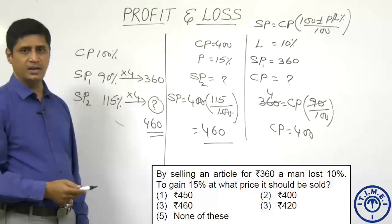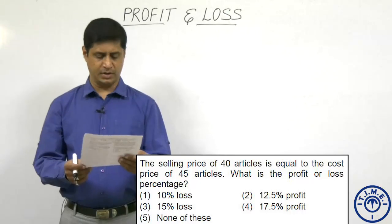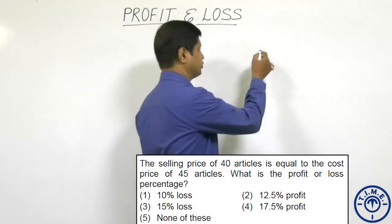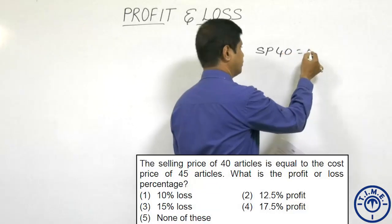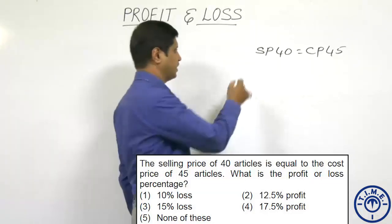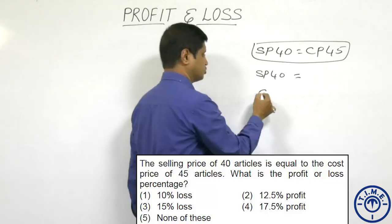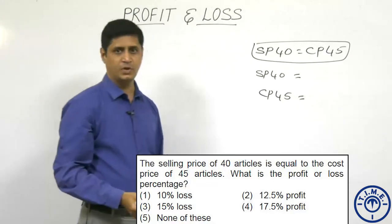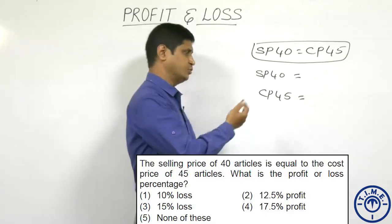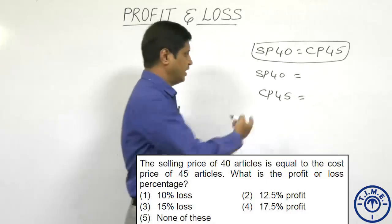The selling price is ₹460, and the right choice is option 3. The selling price of 40 articles is equal to the cost price of 45 articles. What is the profit or loss percentage? Taking the LCM of 40 and 45, which is 360, the selling price of 40 articles is 360 and the cost price of 45 articles is also 360.